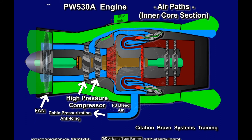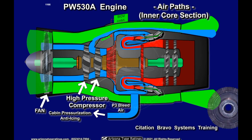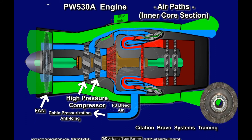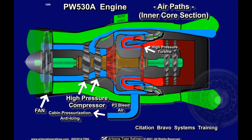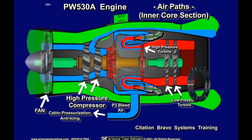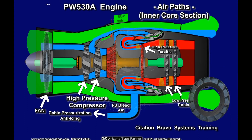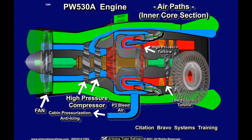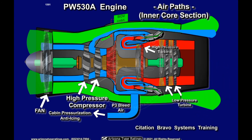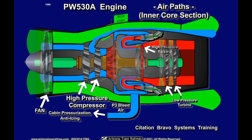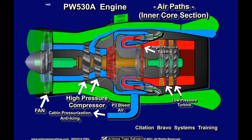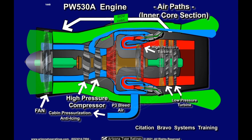After the fuel-air mixture is burned, the hot high-energy air passes through the high-pressure turbine into the low-pressure turbines. A set of guide vanes provide the proper airflow to ensure the most efficient energy transfer to both the high-pressure turbine and the low-pressure turbines. The majority of the energy generated is transmitted to the front fan by way of the N1 shaft.